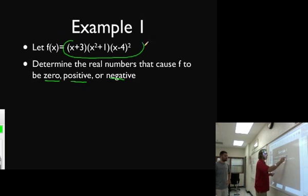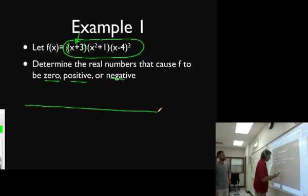When will this thing equal zero? If this equals zero, what makes that parentheses zero? Negative three. So negative three, we're going to put that on the number line. That causes this to be zero.